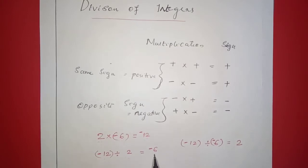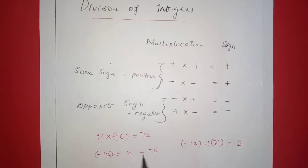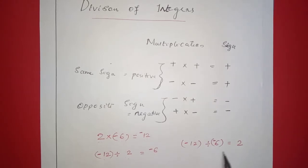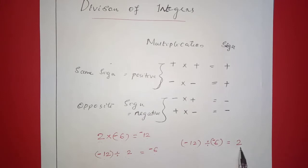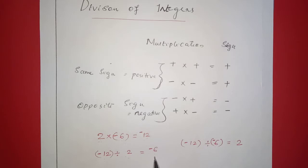The answer is negative. The opposite sign is negative. The answer is positive. We divide the whole numbers. The opposite sign is negative; the same sign is positive.